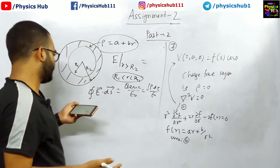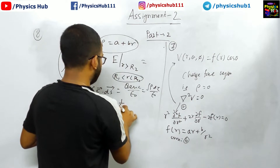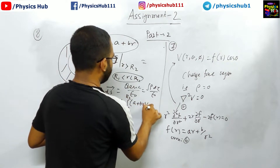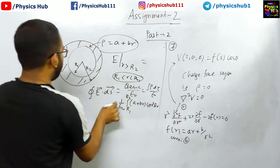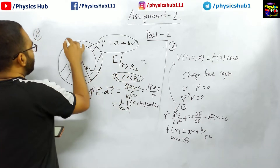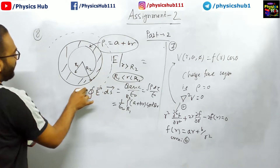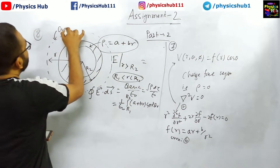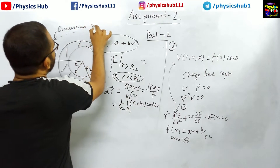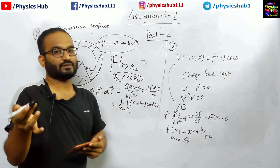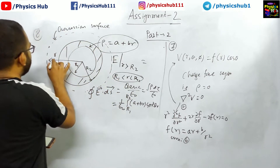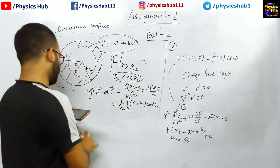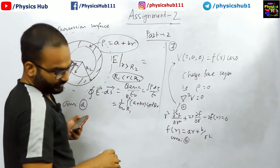The integral for q-enclosed runs from r₁ to r₂: integrating (a + b·r) with volume element 4πr² dr. For the Gaussian surface, we take a spherical surface outside the shell at radius r. The flux gives E·4πr², and since the electric field and area vector are both radially outward (angle = 0, cos 0 = 1), we can solve this straightforwardly. The answer is option D.